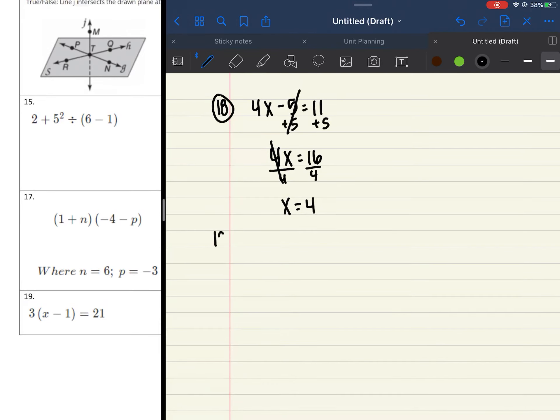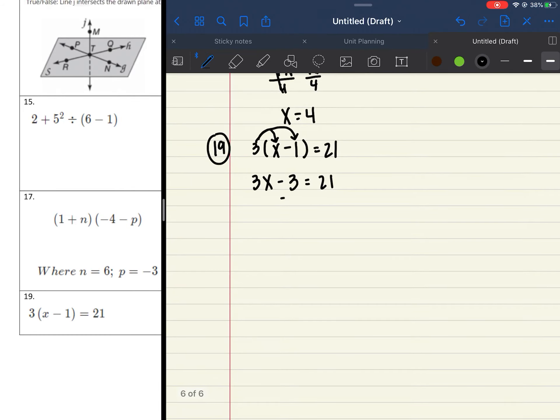19 is one of your multi-step that you have to be distributing in. So 3 parentheses x minus 1 equals 21. We first need to distribute in parentheses. So 3 times x gives me 3x minus 3 times 1, which is 3. And that's equal to 21. Now, I still want to get the x by itself. So I'm going to add 3 to both sides first. 3x equals 24. I'm going to divide both sides by 3. So that x is equal to 8.